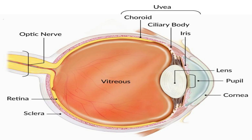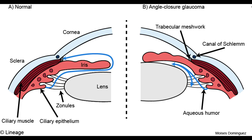Many cases of glaucoma, but not all, occur due to a sufficiently elevated intraocular pressure, caused by impairment of the normal aqueous humor drainage. So before we discuss how to prevent and manage glaucoma, let us first understand how the drainage system of the eye maintains normal intraocular pressure.